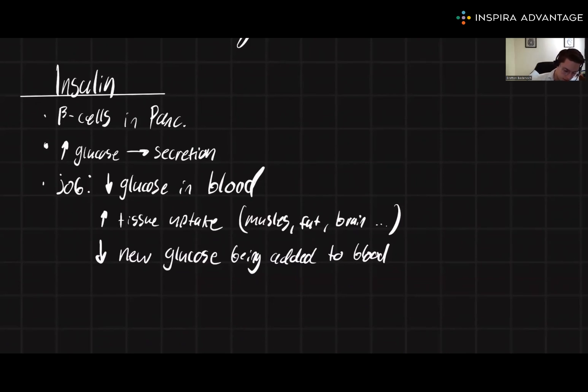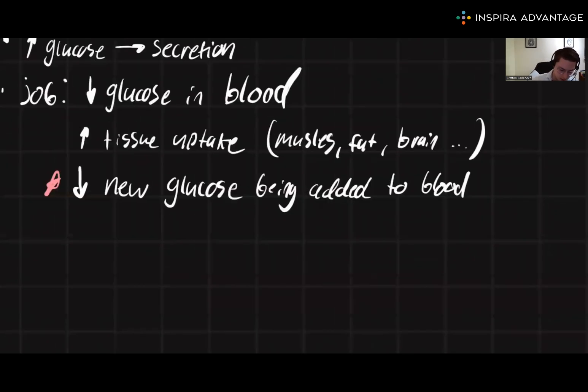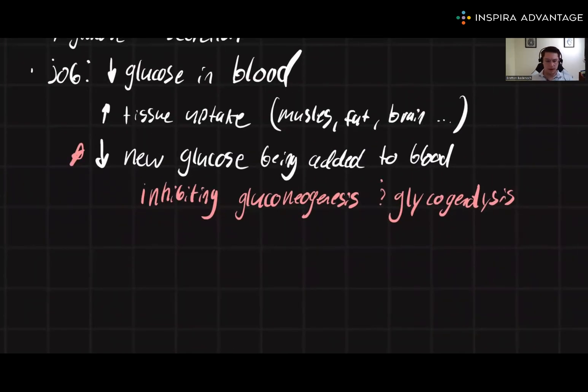Let's first focus on how insulin can decrease new glucose from being added to the blood. It could do this through inhibiting a few processes—it could inhibit gluconeogenesis or glycogenolysis. This makes sense because gluconeogenesis would be making new glucose. We have too much glucose, so we're not going to spend energy making new glucose.